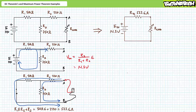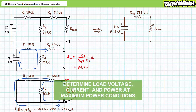Our Thevenin's equivalent circuit is therefore the series combination of ETH at 14.3 volts and RTH at 523.6 ohms in series with our variable load resistor, RLOAD. Stage two now dictates we determine the load resistor which receives maximum power. Additionally, see if you can solve for voltage, current, and power for the load resistor at conditions of maximum power.